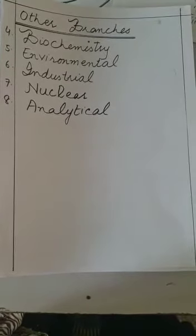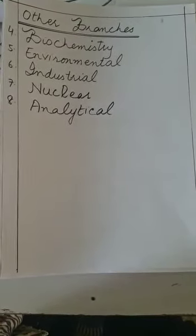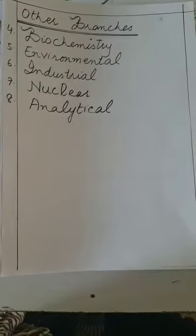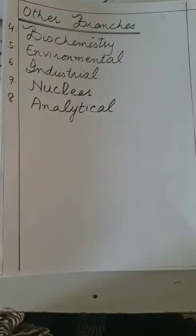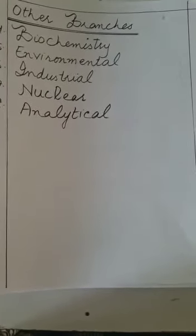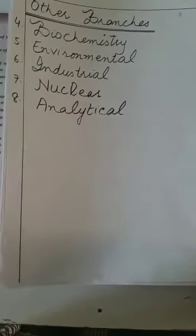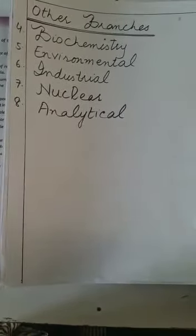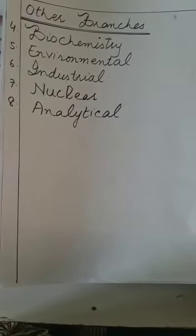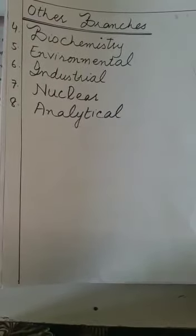We revise the main branches of chemistry again in this lecture. The other branches of chemistry are biochemistry, environmental chemistry, industrial chemistry, nuclear chemistry, and analytical chemistry. So these are all the eight branches of chemistry.